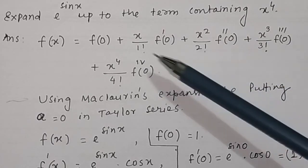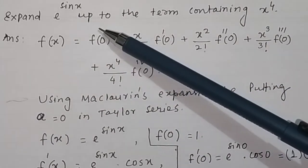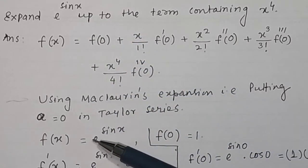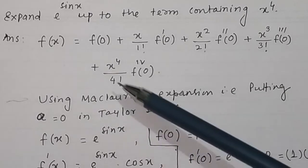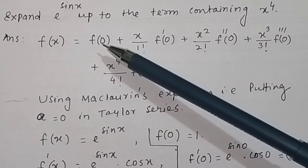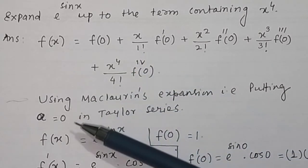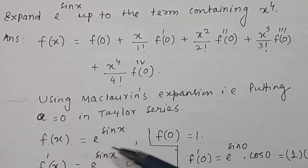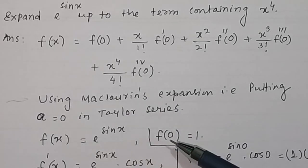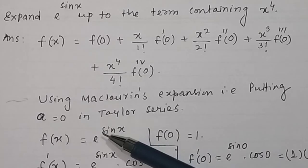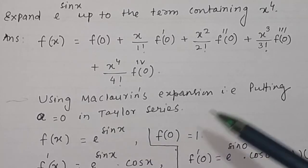The given function is f(x) equal to e to the power sin x. We first find out the value of f(0), so putting x equal to 0, f(0) will be equal to e to the power sin 0. Since sin 0 is equal to 0, e to the power 0 is equal to 1.